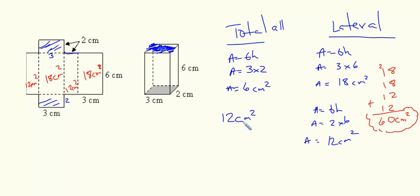Now I'm just going to add the 12 centimeters squared to my lateral surface area for a total of 72 centimeters squared for my total surface area of this rectangular prism.